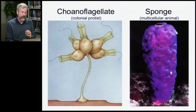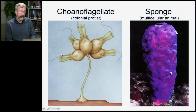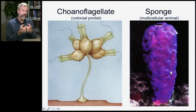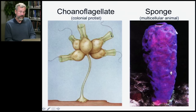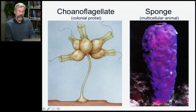It's the origin of the animals themselves. We had the colonial protists, the choanoflagellates. Each one of these can live a separate, independent life, but they have adhesives on their cell surface that allow them to stick together and form colonies. The sponge has quite similar cells that have flagella creating a little current that brings in small particles they can feed on.